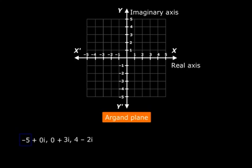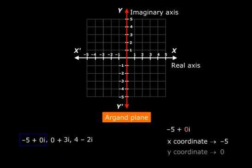So look at the integer minus 5 or minus 5 plus 0i. Here the real part is minus 5 and that is the x coordinate. And the imaginary part, that is 0. So we have the y coordinate as 0. So to plot minus 5 plus 0 iota or minus 5 for that matter, we need to plot the point minus 5 comma 0 and we do that like this. So this point represents the integer minus 5.